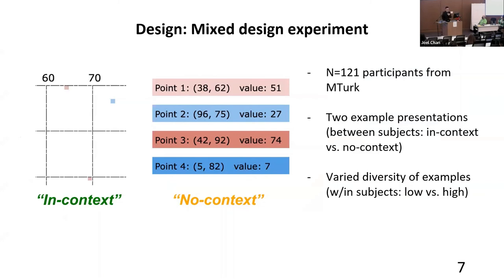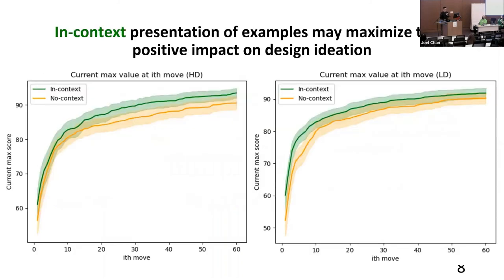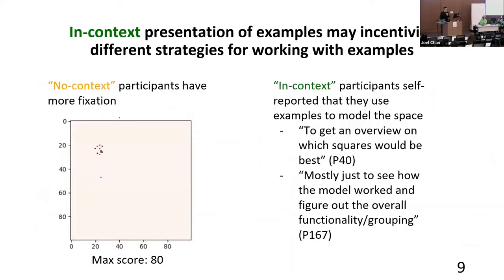We conducted a study with 121 participants on Mechanical Turk. We had two example presentation conditions — in-context and non-context — and we also varied the diversity of examples: low diversity, where examples are clustered near each other, and high diversity, where examples are sparse. We found that in-context presentation of examples may maximize their positive impact on design ideation. For both high-diversity and low-diversity example presentations, in-context participants outperformed non-context participants across all 60 moves each participant had to navigate the space.